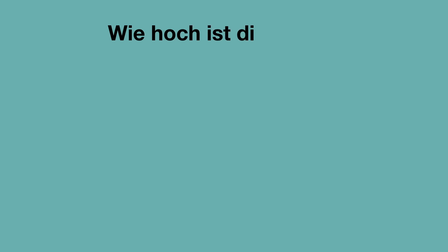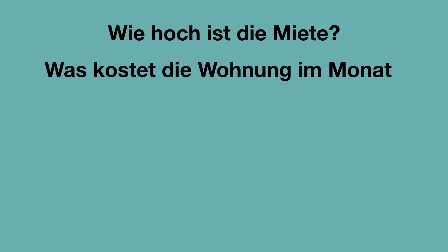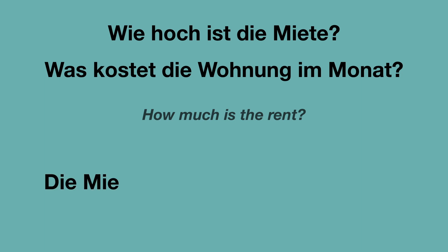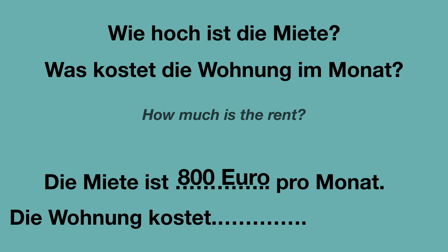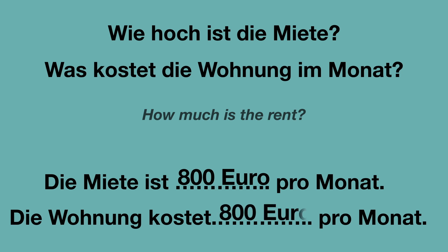Wie hoch ist die Miete? Oder: Was kostet die Wohnung im Monat? Die Antwort: Die Miete ist — pro Monat — zum Beispiel: Die Miete ist 800 Euro pro Monat. Oder: Die Wohnung kostet — pro Monat — zum Beispiel: Die Wohnung kostet 800 Euro pro Monat.